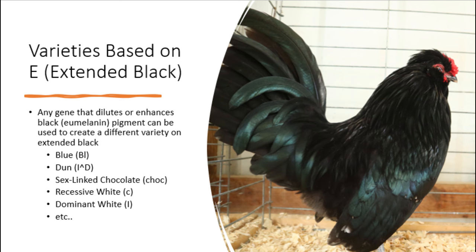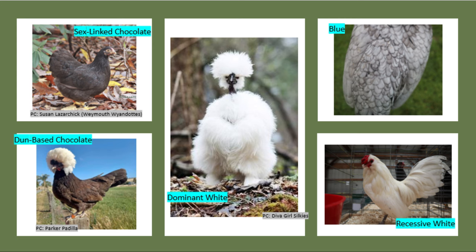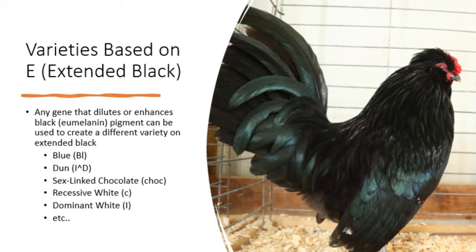Any gene that dilutes or enhances black pigment can be used on a bird based on Extended Black to create a new variety. For example, blue, dun, sex-linked chocolate, recessive white, and dominant white could all be used to create those colors on Extended Black. It is important to remember that sometimes different genetic makeups can be used to create the same or similar varieties.